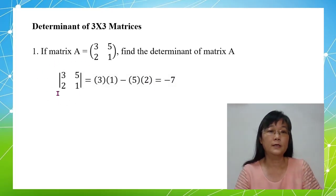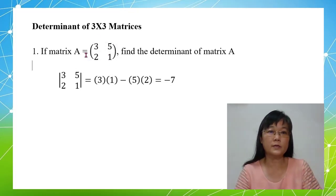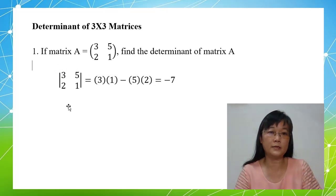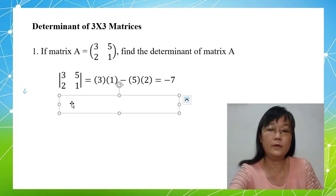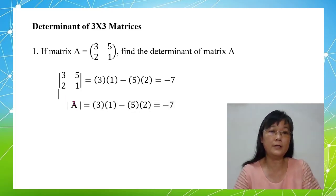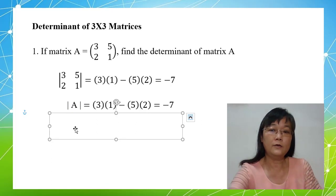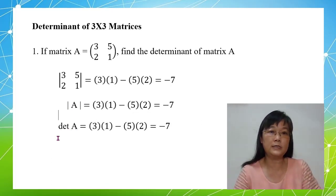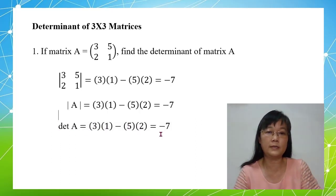Now we look at the determinant notation. The determinant can be denoted by using two straight lines. It is different from the matrix — for a matrix, we use round brackets. For the determinant, we use two straight lines. We also have another method where we can write det(A). DET stands for determinant. So det(A) is equal to 3 times 1 minus 5 times 2, which is negative 7.